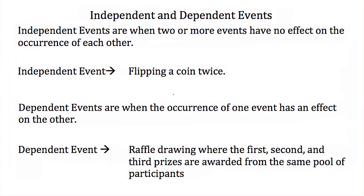My first event is when I flip the coin the first time, and if I get heads the first time I flip a coin, that has no effect on whether I get heads or tails the second time I flip the coin. So each event has no effect on the odds, the probability, or the occurrence of the second event.